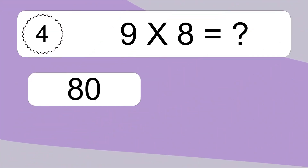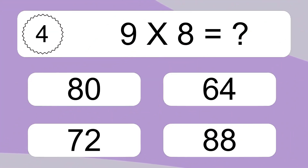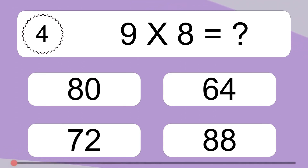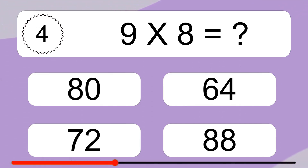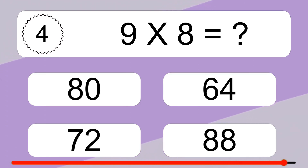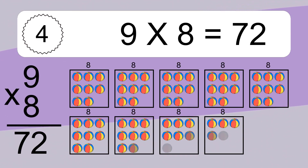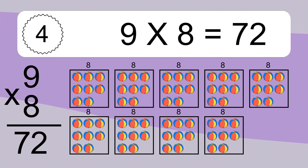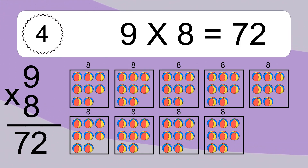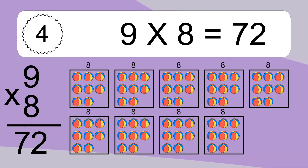9 times 8 equals what? We have 9 boxes, and each box has 8 colorful balls inside. If you count all the balls in all the boxes together, you will have 9 times 8 balls. This equals 72 balls.